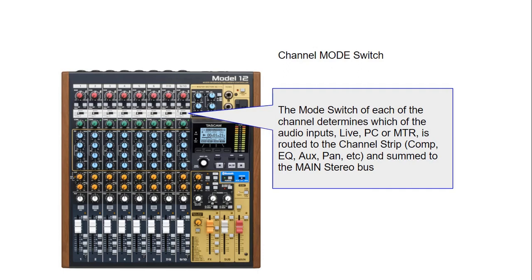The mode switch of each channel determines which audio inputs — like the live input through the microphone or guitar, the playback from your PC, or the onboard multi-track recorder — is routed to the channel strip, which includes the compressor, EQ, auxiliary sends, panning, etc., and is summed to the main stereo bus. So the merge switch selects what flows to the rest of the channel strip.